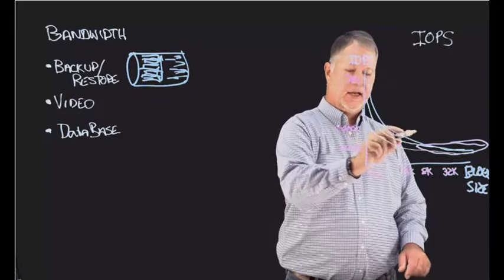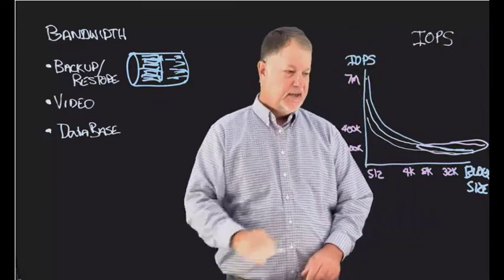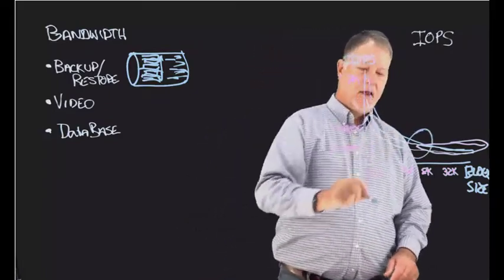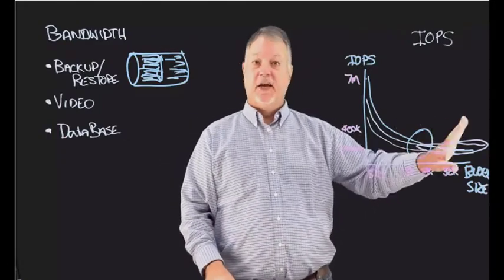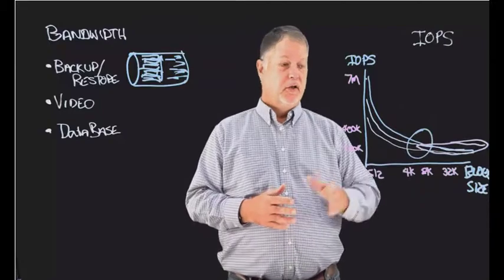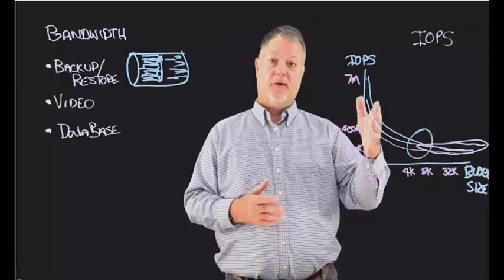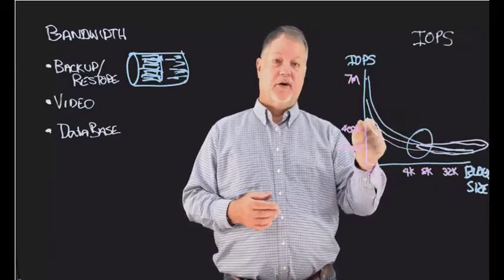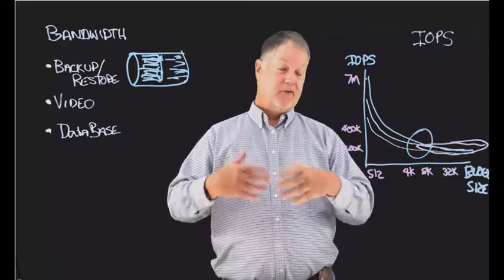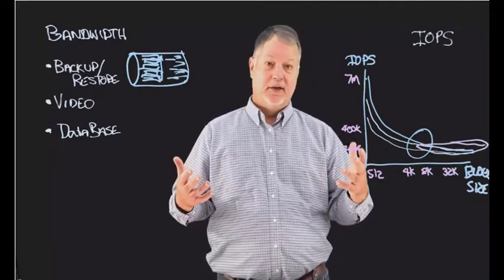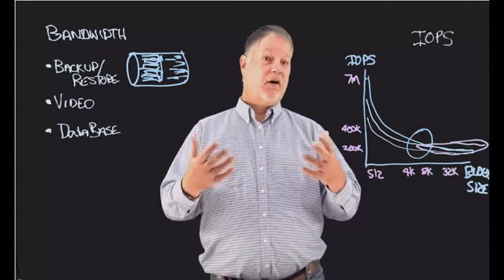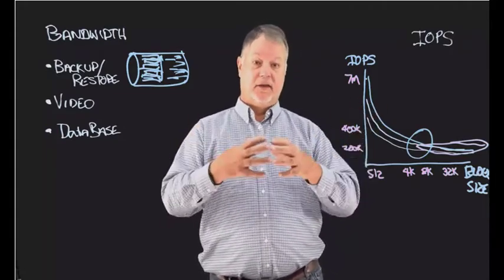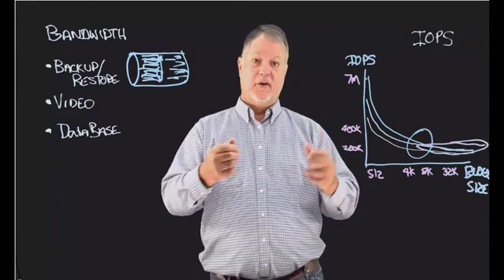But you can see once you get in this 4k and 8k block size in this area, everybody's about the same. Once you get to a block size of 8k or above, the IOPS really don't matter anymore. So where do IOPS matter? IOPS matter for applications that run at very small block sizes.